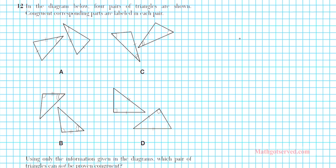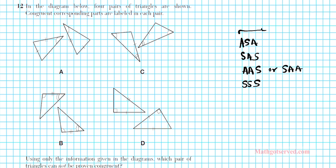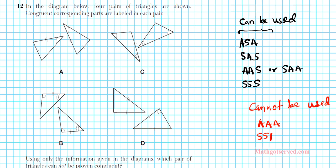What can be used: we have ASA, and then SAS, and then AAS or SAA — the order doesn't really matter. And then SSS. So these are the congruency postulates that can work. Also, HL — hypotenuse-leg — can be used, but only for right triangles. What cannot be used: you cannot use AAA, and you cannot use SSA or ASS.